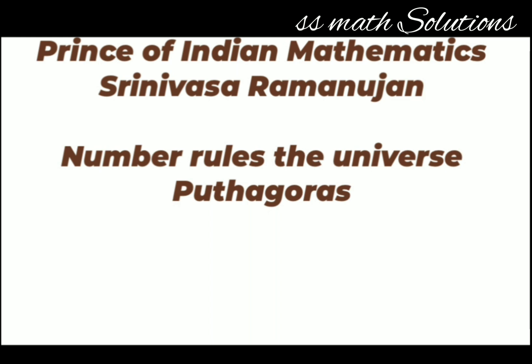Now some general questions. Who is known as the Prince of Indian Mathematics? Srinivasa Ramanujan. Who said 'Number rules the universe'? Pythagoras. So Srinivasa Ramanujan is the Prince of Indian Mathematics and 'Number rules the universe' was said by Pythagoras.